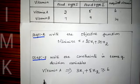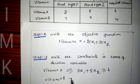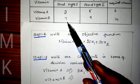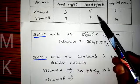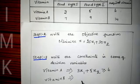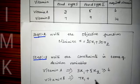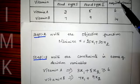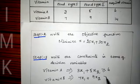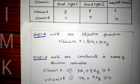Next, we write the condition for vitamin B. For food type 1, the vitamin B requirement is 7, so we write 7x1. For food type 2, the vitamin B requirement is 9, so we write 9x2, giving 7x1 + 9x2. The minimum daily requirement is 14, so we write greater than or equal to 14. The constraint for vitamin B is: 7x1 + 9x2 ≥ 14.